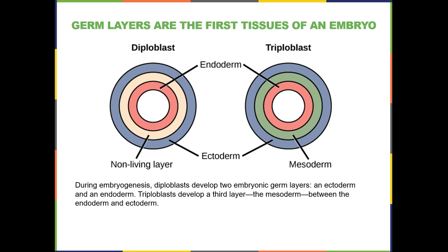Ectoderm is the outer surface layer and endoderm is the innermost layer. Some animals only ever have these two layers, with a non-living layer in between called the mesoglia — those are diploblasts. For other animals, a third tissue type forms between the endoderm and the ectoderm called the mesoderm — those are triploblasts. So based on whether or not the animal forms a mesoderm, we classify the animals into diploblasts and triploblasts.